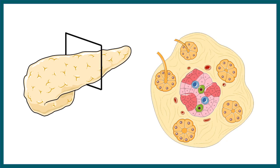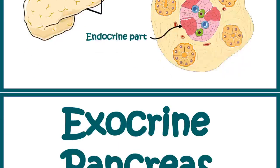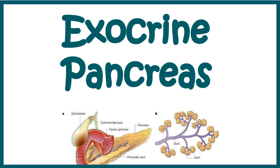Inside the pancreas there are two broad sub-regions. One region is the endocrine part, and the other regions form specialized duct-like structures coming from glandular cells — these are known as the exocrine part of the pancreas. Let us first talk about the exocrine pancreas, its function, and then move on to the endocrine pancreas.